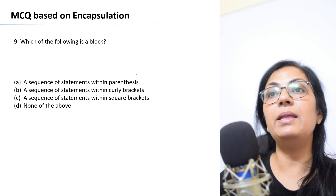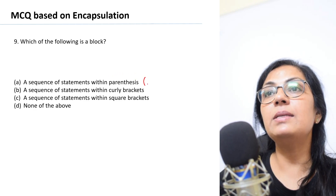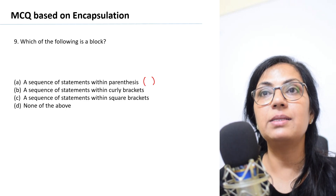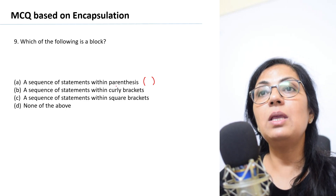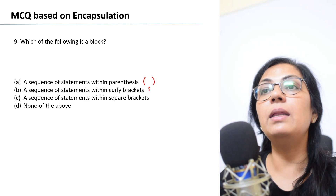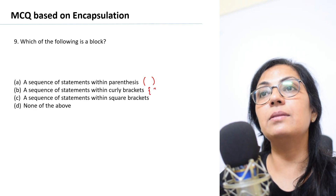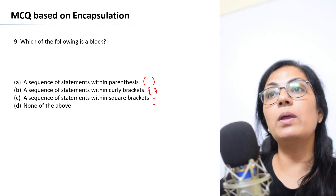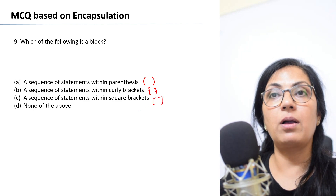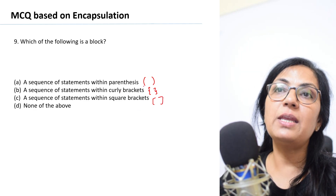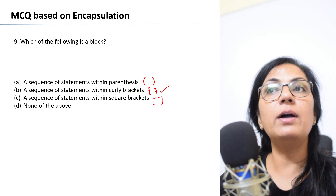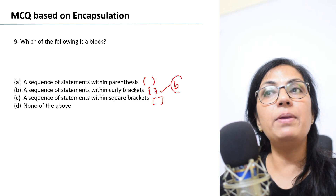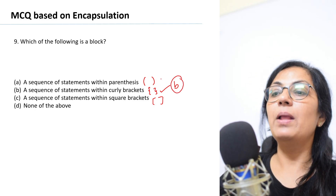Which of the following is a block? A sequence of statements within parentheses, within curly brackets, or within square brackets? A sequence of statements written within a pair of curly braces is termed a block. So option B is the correct answer.